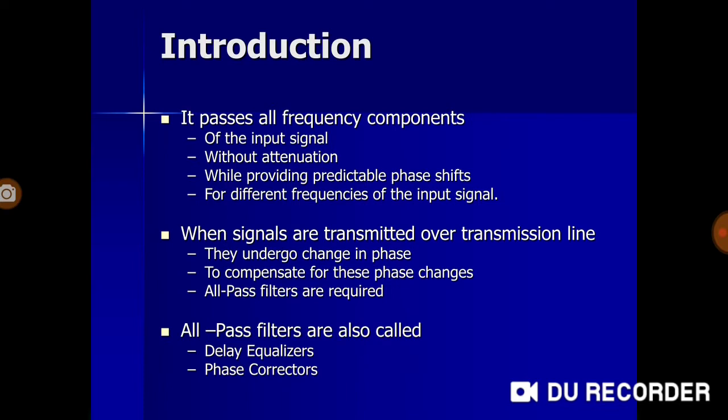This is where we need to focus, because apparently the name is 'all-pass' and the classification is based on frequency. If all frequencies are passed, what is the need for such a filter? The key point is that they are passed without attenuation, meaning the amplitude of the input and output of this filter will be the same. So the form of the signal is maintained.